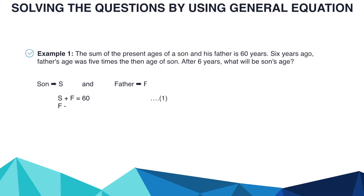6 years ago, father's age was 5 times the age of the son, meaning F minus 6 equals 5 times (S minus 6). This is equation 2. We need to find the son's age after 6 years, so we want S plus 6.